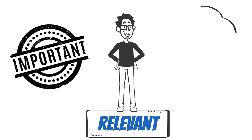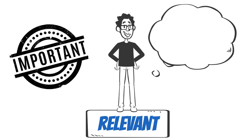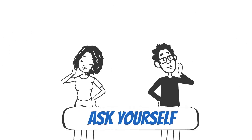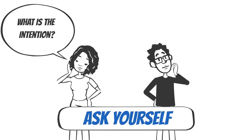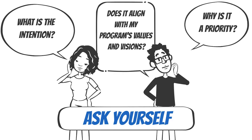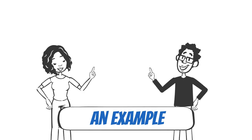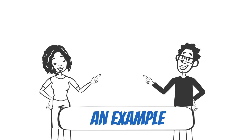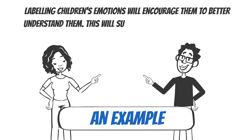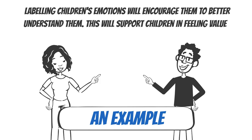The goals need to matter to you and to your journey towards quality improvement. Ask yourself: what is the intention of this goal? Does it align with my program's values and visions? Why is this a priority focus? For example, labeling children's emotions will encourage them to better understand them. This will support children in feeling valued in my program. This makes my goal relevant.